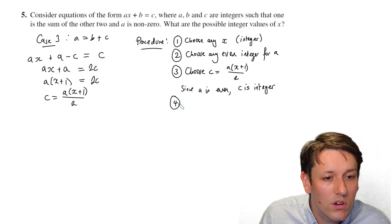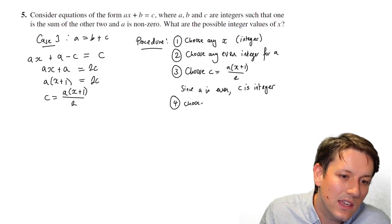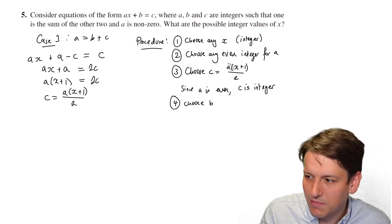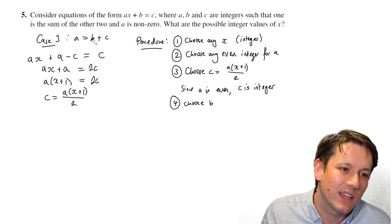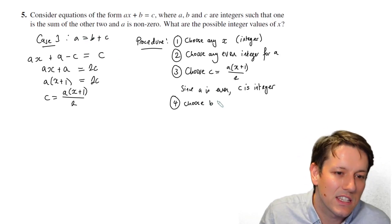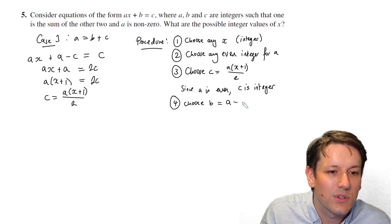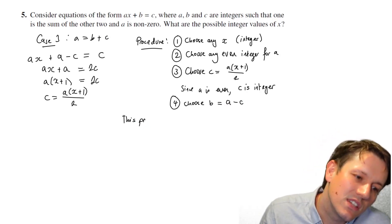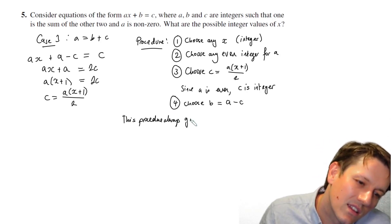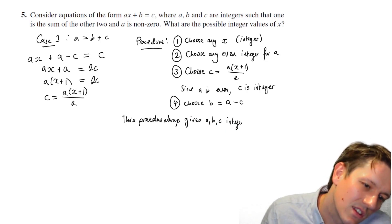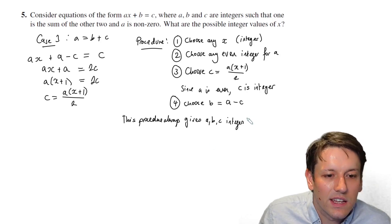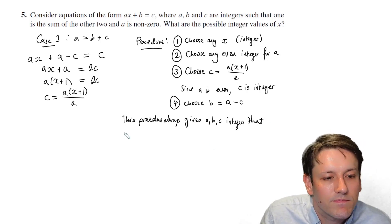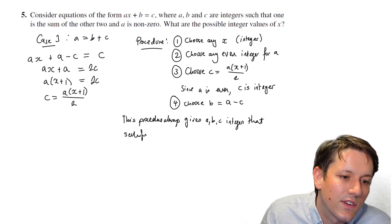And at step four, I'm going to choose b. b hasn't featured anywhere yet, so I can just make b whatever I want here, to make a equals b plus c correct. So we'll just choose b equals a minus c. And this procedure always gives a, b, and c integers that satisfy the problem.